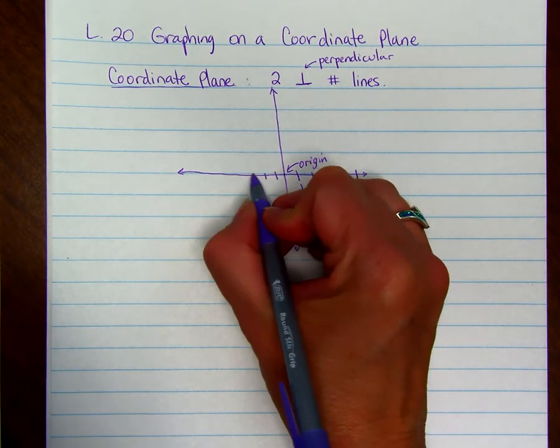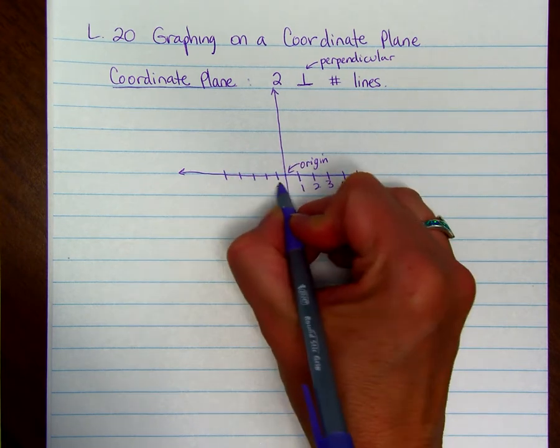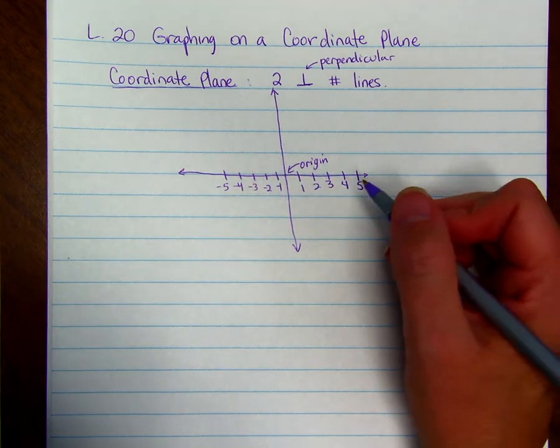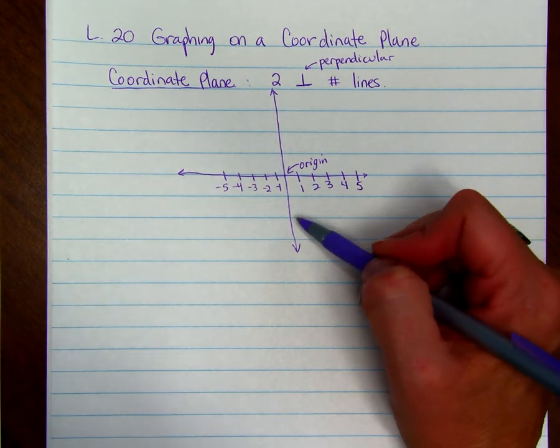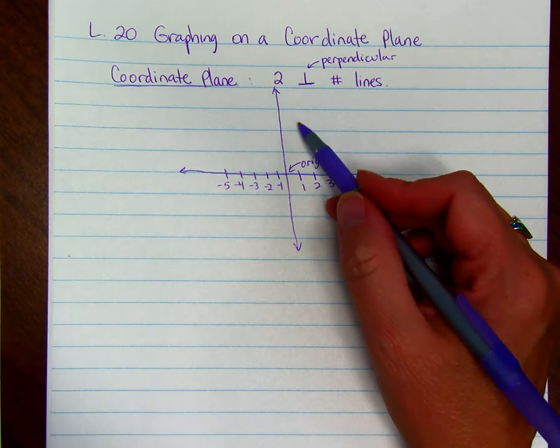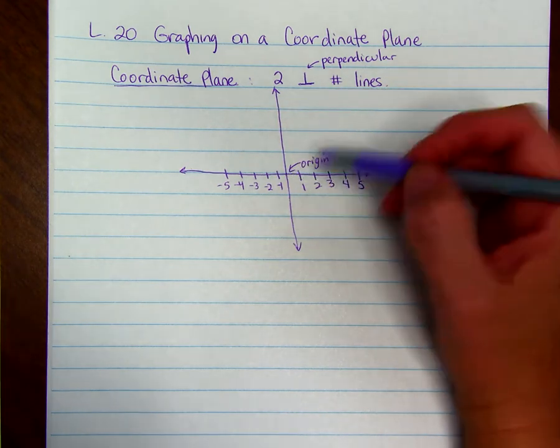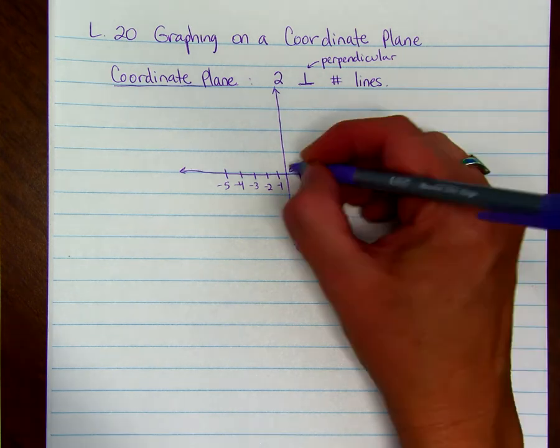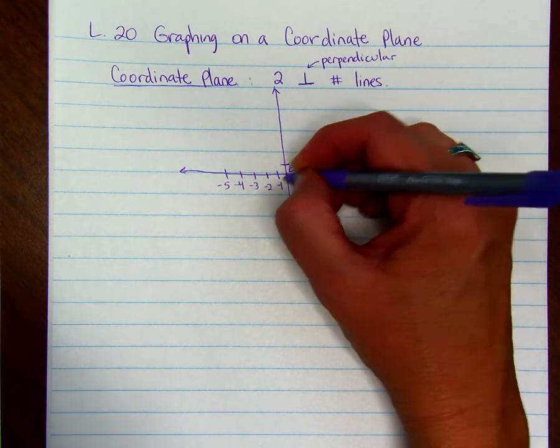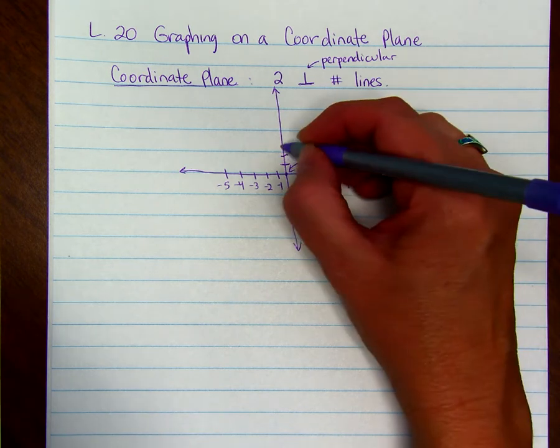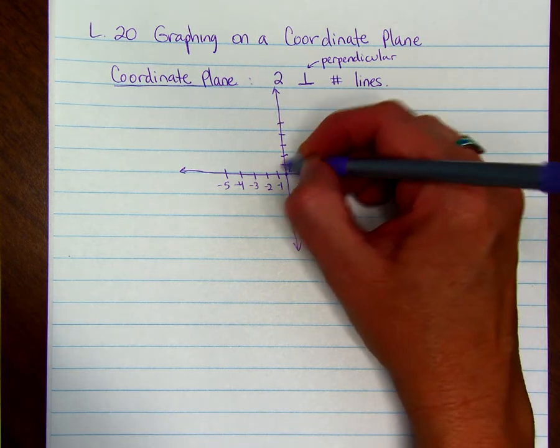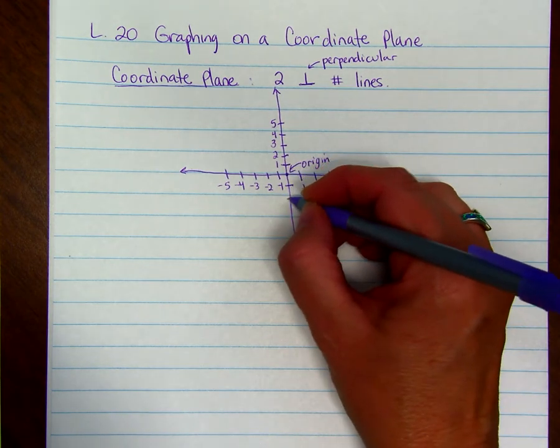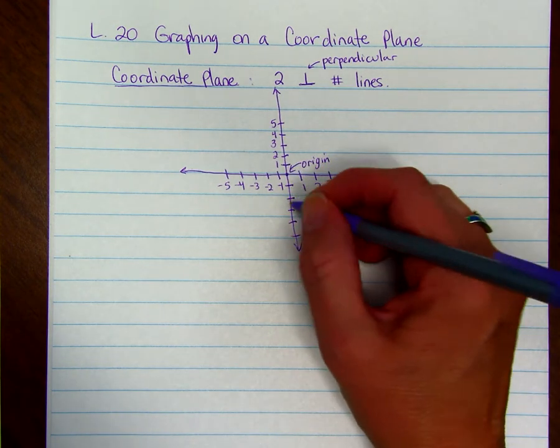And to the left of the origin we have negative numbers. So negative one, negative two, negative three, negative four, negative five and so on. When we have a perpendicular number line the positives go up and the negatives go down, kind of like a thermometer. So this point right in the middle is the origin. So we go positives as we go up: one, two, three, four, five and so on. And then negatives as we go down the number line.